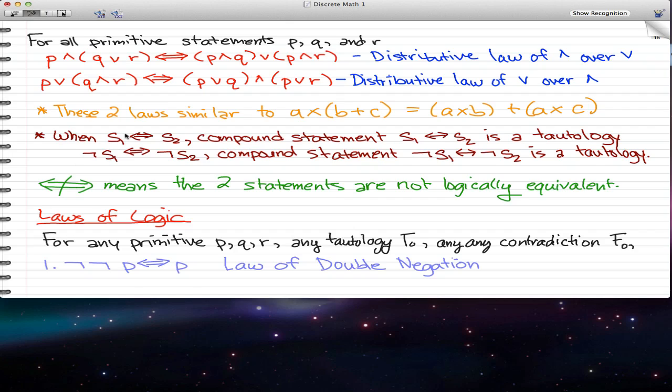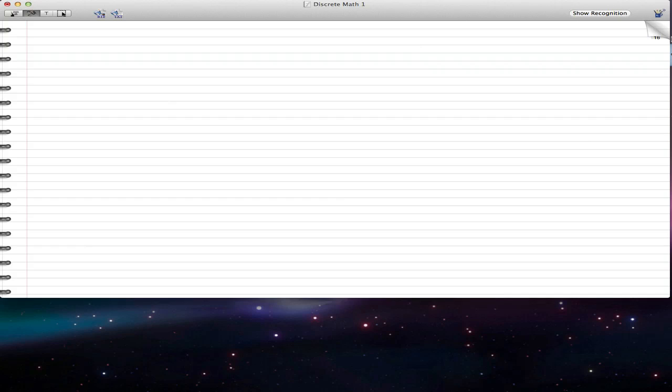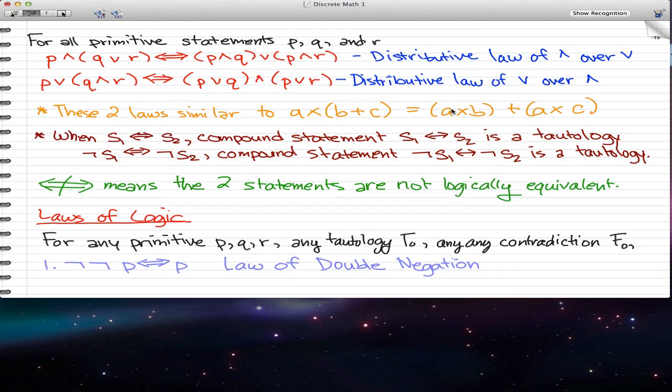And here's a simple hint - it's not really related but it's kind of related. When S1 is logically equivalent to S2, the compound statement 'S1 biconditional S2' is a tautology. So that means that this statement that we have here - all the truth values in that statement are all ones. And the same goes for negated S1 is logically equivalent to negated S2 - the compound statement 'negated S1 biconditional negated S2' is also a tautology, meaning that their truth value components are all ones.